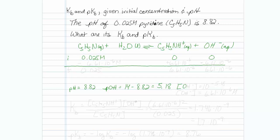Which means that the hydroxide concentration has to be equal to 6.61 times 10 to the minus 6 molar.